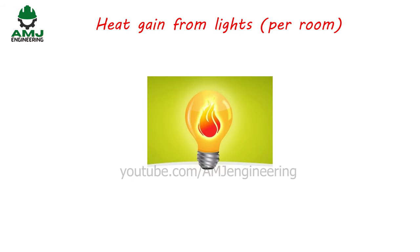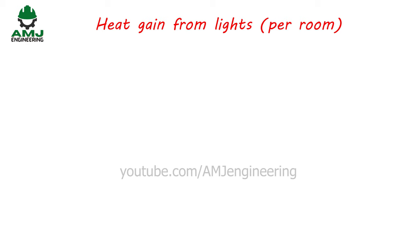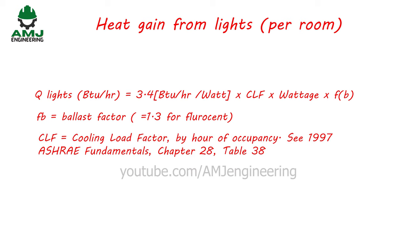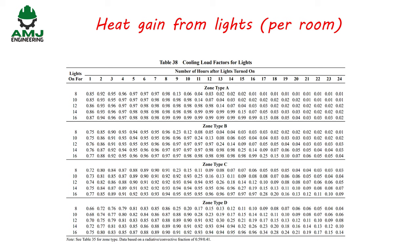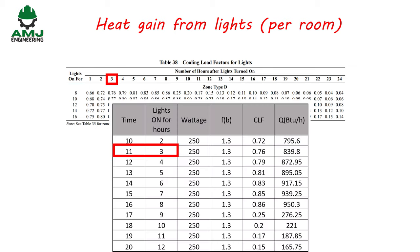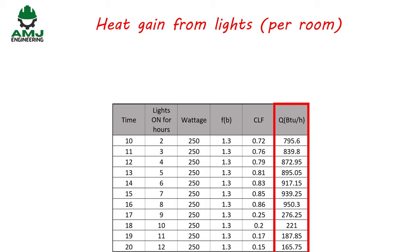The next step is to calculate heat gain from lights using: Q_lights = 3.4 × CLF × Wattage × Ballast Factor. The ballast factor is 1.3 for fluorescent lights. CLF is the cooling load factor by hour of occupancy, taken from Chapter 28, Table 38, for Zone Type D. For 8-hour duty, CLF values are read based on hours after lights are turned on. The total heat gain from lights per room is then tabulated.